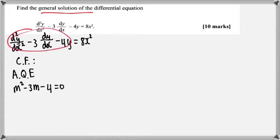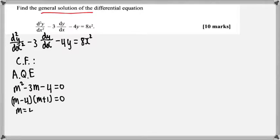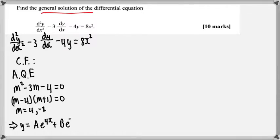That is gained just by looking at the original equation — this gives you m², you have your −3m, and then the constant. So that's how you get this equation. We then solve this equation for m by factorizing the quadratic, and you would get m = 4 and m = −1. The complementary function would therefore be given by y = Ae^(4x) + Be^(−x), because the roots of the auxiliary quadratic are real and distinct.